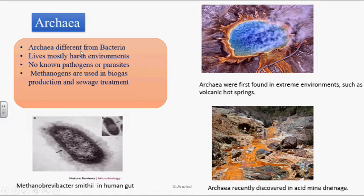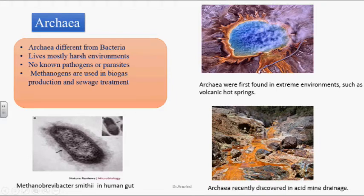Archaea is different from bacteria — it is prokaryotic in nature but distinct from bacteria. It lives mostly in harsh environments, and nowadays it is also found in normal environments where eukaryotic cells exist. There are no archaeal pathogens — they are not parasitic in nature. Archaea are methanogens, meaning they produce methane gas, which is useful for biogas and treating sewage. One archaeal organism, Methanobrevibacter smithii, lives in the human gut, is not pathogenic, and helps in digestion.